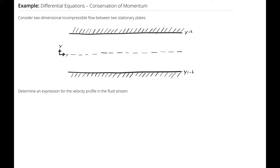Like with the previous example, the best place to start is with the conservation of mass. Since I have incompressible flow, the conservation of mass simplifies to ∂u/∂x + ∂v/∂y + ∂w/∂z = 0.